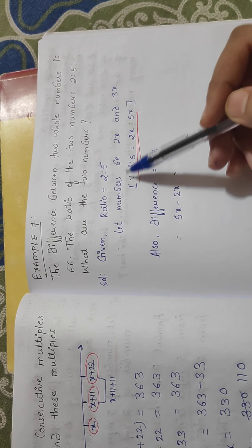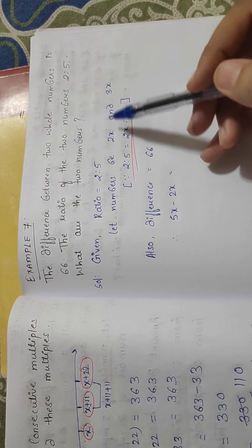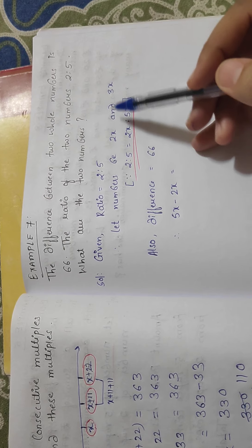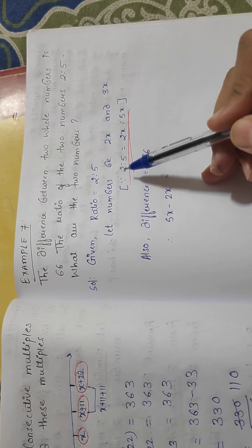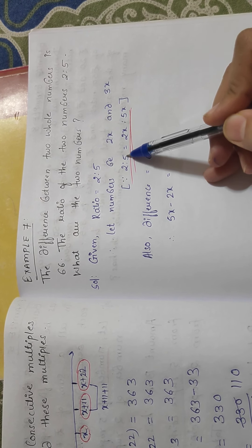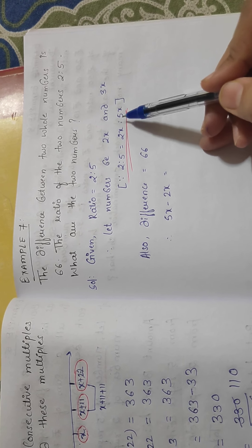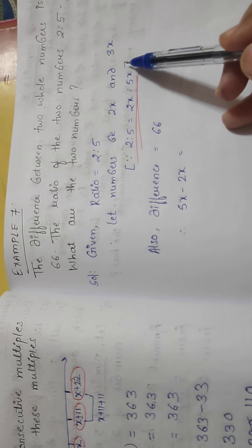So let that numbers be 2x and 5x. Here we have taken x as common multiple. So because we can say that 2 is to 5 is nothing but 2x is to 5x because this x is common multiple which we have taken in both the cases.